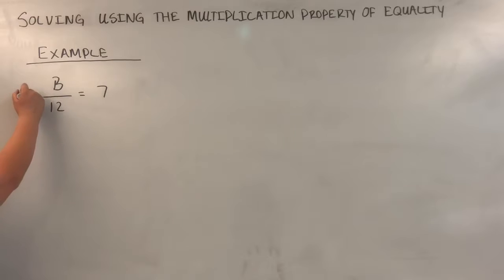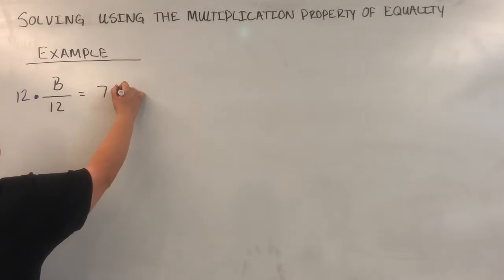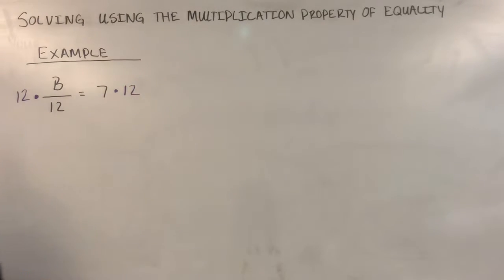So I'm going to multiply both sides of this equation by 12. On this side, the 12s are going to cancel out, and I'm left with b. On this side, I have 7 times 12, and that's going to be 84.